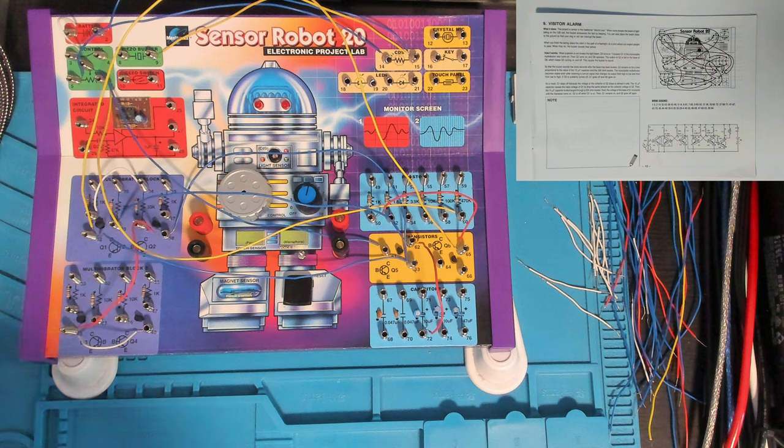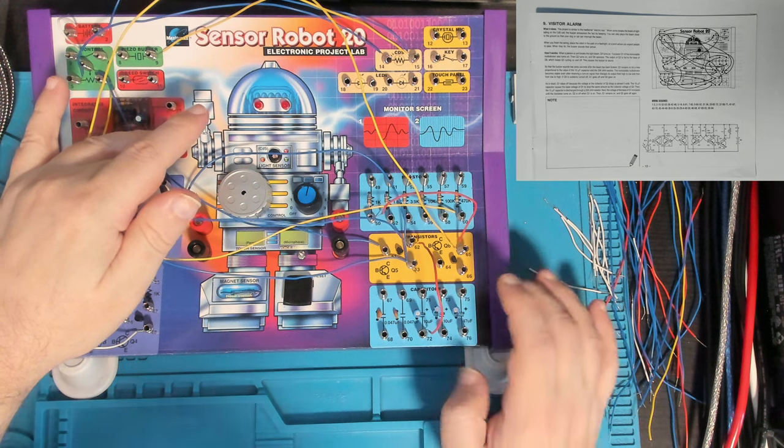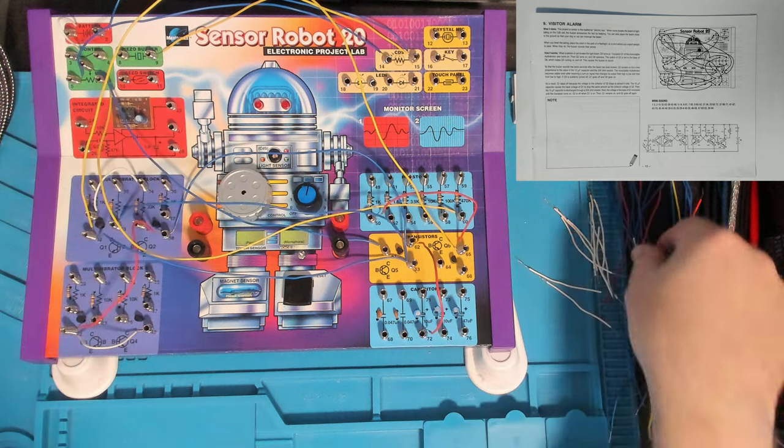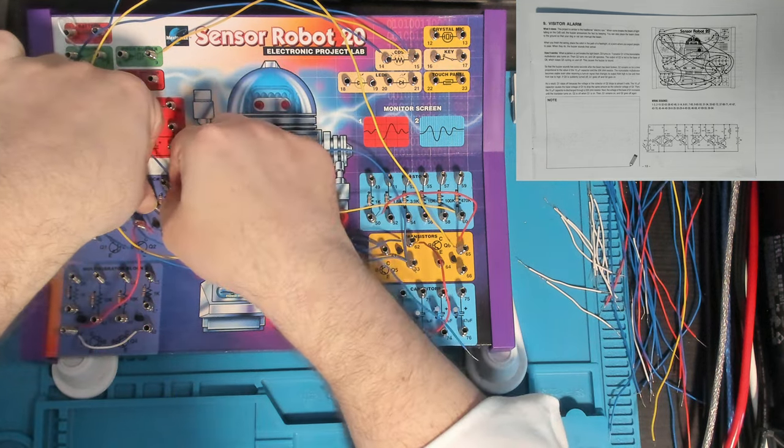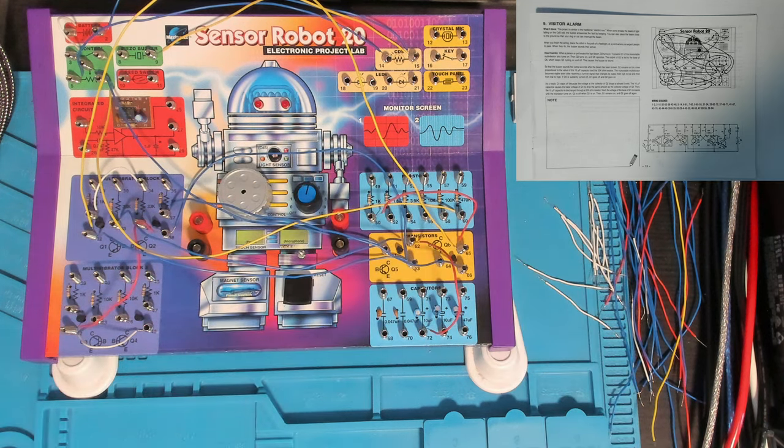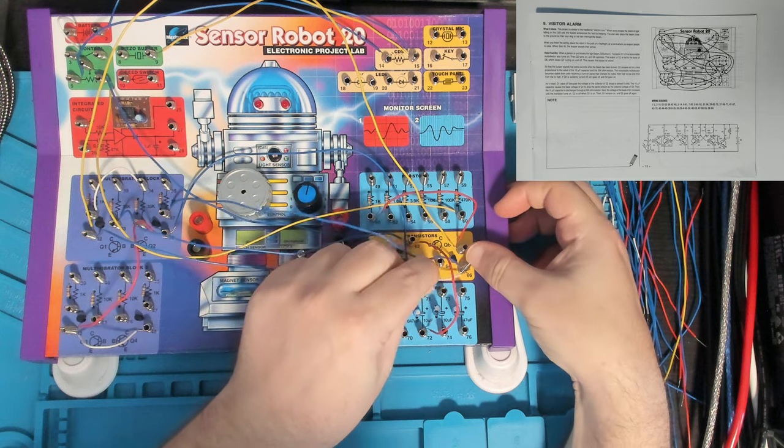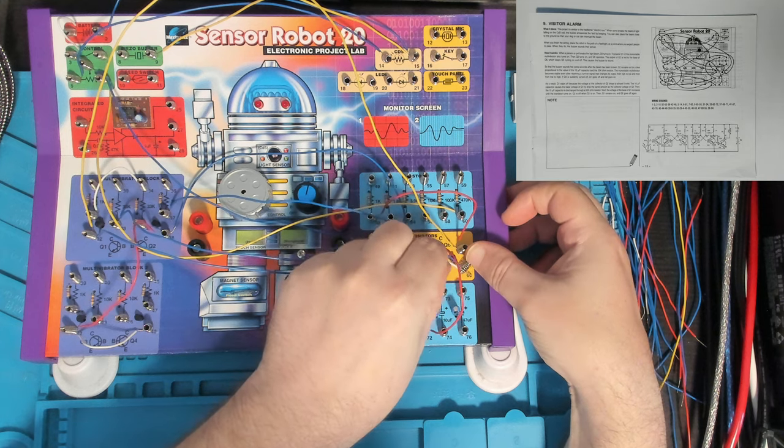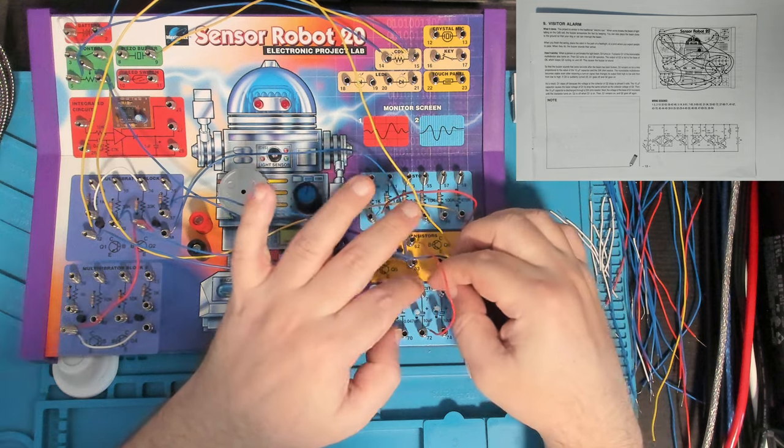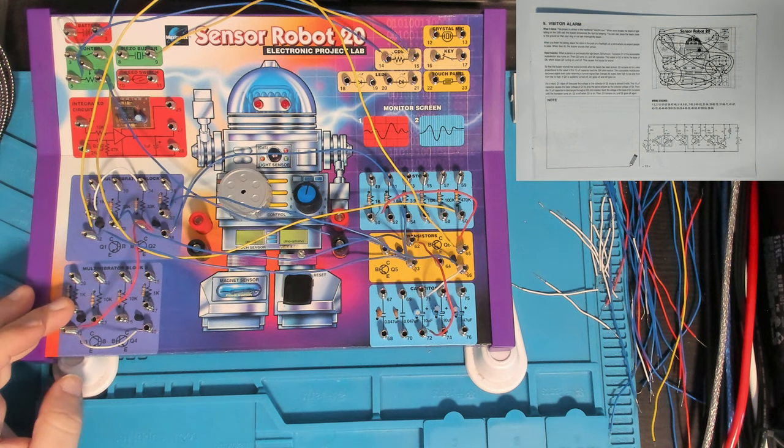And we've got 37 to 66. 37 is the collector of Q2, and 66 is the emitter of Q6. Then 66 to 71, which is the positive side of our 10 microfarad capacitor.